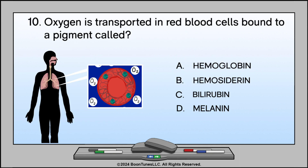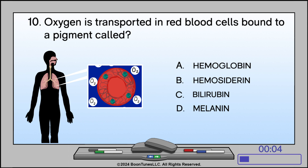Oxygen is transported in red blood cells bound to a pigment called: A. Hemoglobin. B. Hemocytorin. C. Bilirubin. D. Melanin. The answer is A. Hemoglobin.